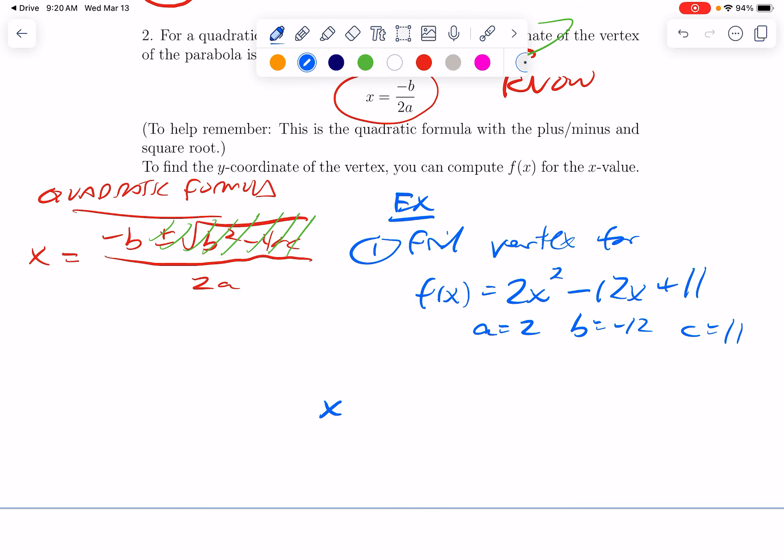If I want to find the x coordinate, I do minus b over 2a. And I strongly recommend you literally write this. Write x equals, write the formula. I've seen people do stuff in their head and make silly mistakes. I've seen people get a number and not realize it's the x coordinate. So begin by writing x equals negative b over 2a. So negative b would be negative negative 12, which is actually positive 12. 2a would be 4. So this is 3.